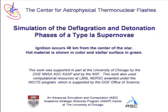What I'm going to show you is such a simulation. You'll see an ignition that occurs just barely off center from the center of the star. Hot material is shown in color and the surface of the star in green. Prior to our simulations, people had only been able to run these simulations in 1D or 2D, in which cases the only reasonable thing to do was to ignite the star at a point at the center.